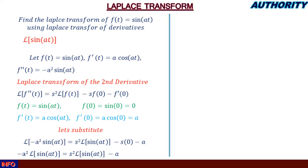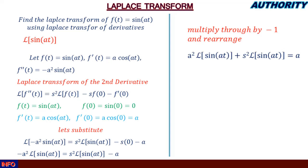Now we multiply through by −1 and rearrange, collecting like terms. The −a²·L{sin(at)} becomes +a²·L{sin(at)}, and the s²·L{sin(at)} moves from the right to the left as +s²·L{sin(at)}, giving: a²·L{sin(at)} + s²·L{sin(at)} = a.